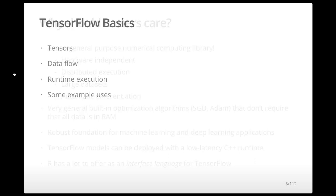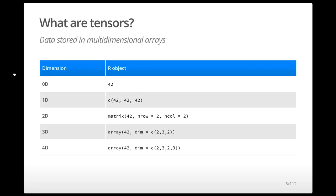There are lots of interesting things we can do from R with TensorFlow. Before getting into deep learning, let's set a foundation: what are tensors and what's flowing? Tensors are really just multidimensional arrays — something you're already familiar with in R. The most familiar is a 1D tensor, which is a vector. There are also 2D tensors, which are matrices. R supports higher-dimensional arrays — 3D and 4D. There's also a 0D tensor, which is a scalar, conceptually a vector always of length 1.